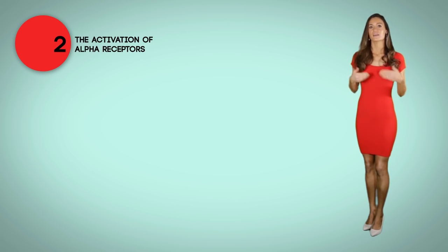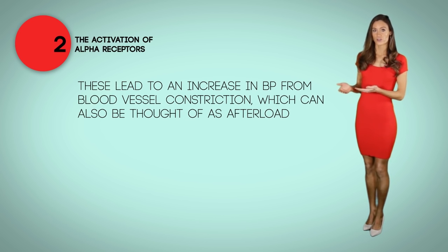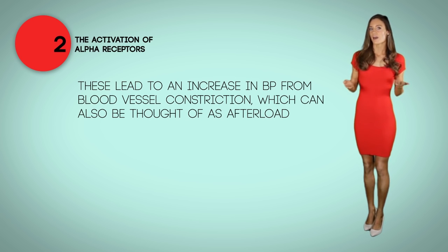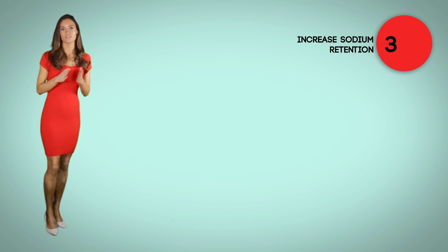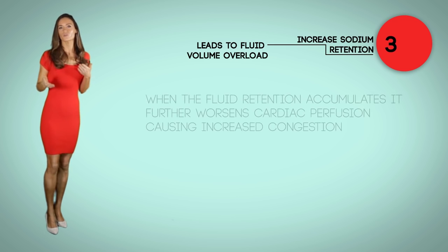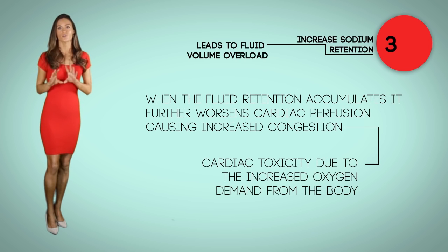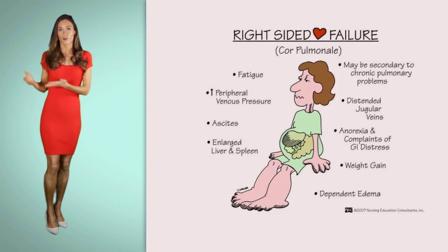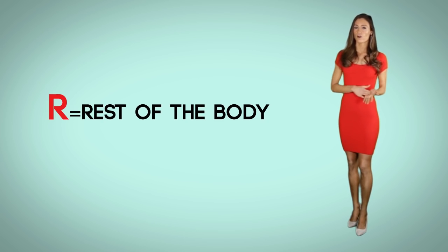The second effect of the sympathetic nervous system is the activation of alpha receptors. When alpha receptors are activated, this leads to an increase in blood pressure from blood vessel constriction, which can also be thought of as afterload. This increase in afterload, also known as blood pressure, can further lower cardiac output. This is why alpha blockers are given to block the constriction, thus inhibiting the elevation in blood pressure. The third effect is an increase in sodium retention, which leads to fluid volume overload, worsening cardiac function, causing congestion and cardiac toxicity due to increased oxygen demand — hence right-sided heart failure. A tip: R equals the rest of the body.